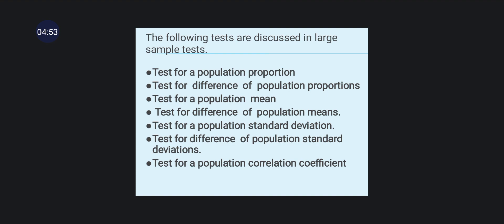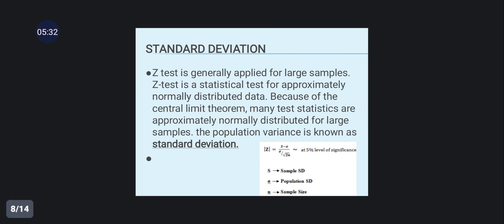The following tests are discussed for large samples: the test for population proportion and the difference of population proportions; the test for population mean and the difference of population means; the test for population standard deviation; the test for the difference of population standard deviations; and the test for the population correlation coefficient.